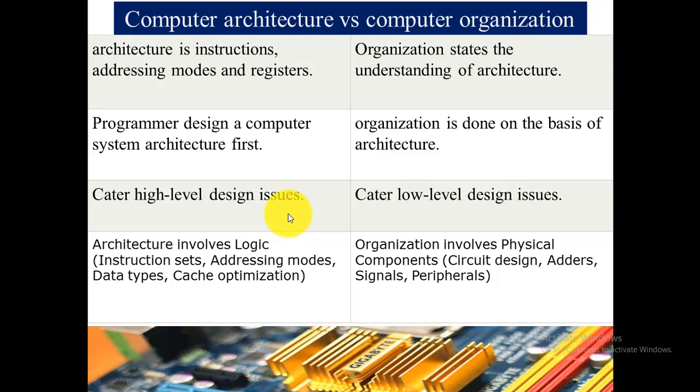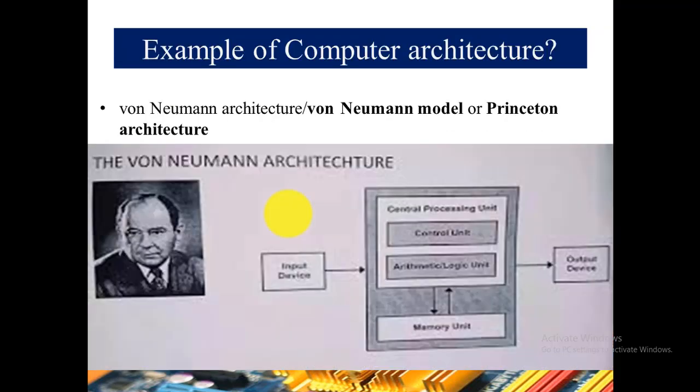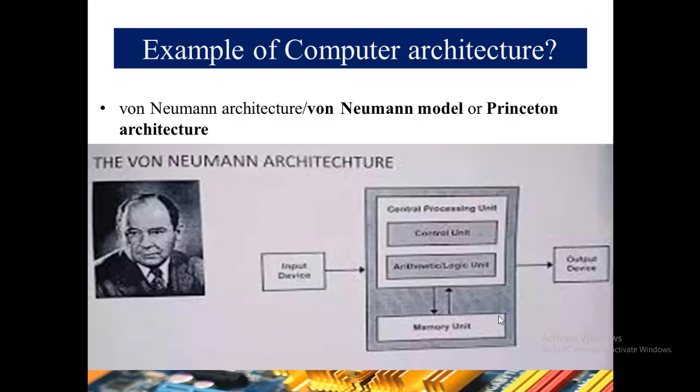Let's take an example of computer architecture: the very famous Von Neumann architecture, also known as the Von Neumann model or Princeton architecture. It is based on the stored program computer concept, where instruction data and program data are stored in the same memory. This design is still used in most computers produced today. The Von Neumann architecture has its own CPU, control unit, memory unit, input/output devices, and external storage.